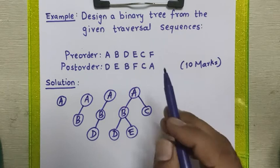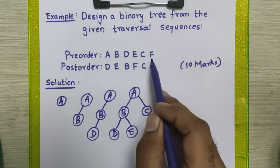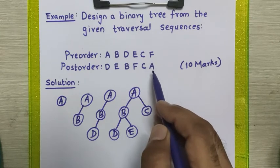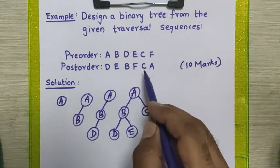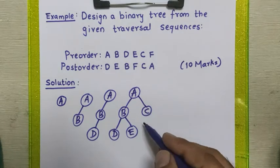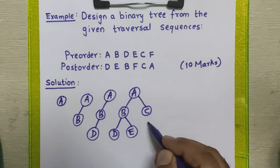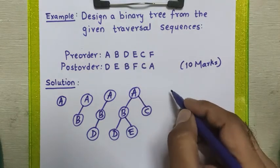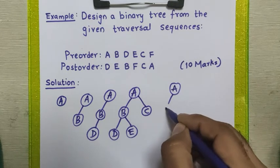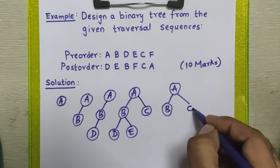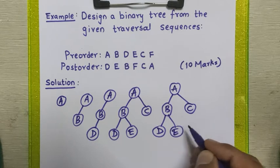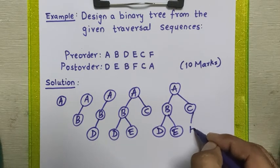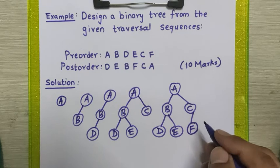After placing node C, we take the next element from the pre-order sequence: node F. Checking the post-order sequence, it appears before A, meaning it is part of node A. But it appears immediately before node C, meaning it is part of node C. Since node C does not yet have a left or right child, node F must be placed to the left side of node C.